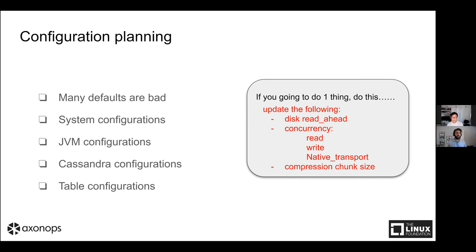JVM configurations are also problematic. Cassandra used to ship with JVM settings that were not great - using ParNew and CMS with a really small new gen, which caused frequent GC pauses. Those pauses would take a long time because lots of memory had to be copied around. You definitely want to just use G1GC and give it as much memory as you can up to 31 GB, and it works out much better.